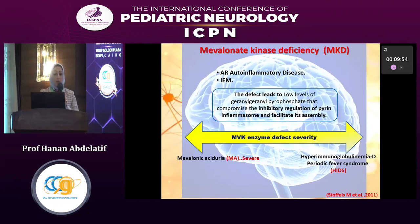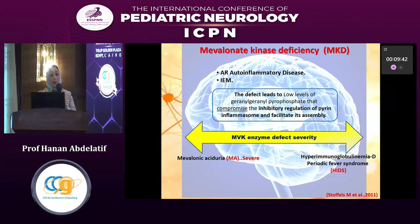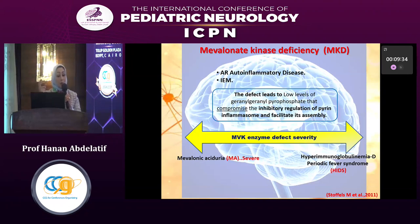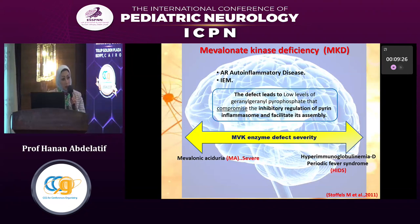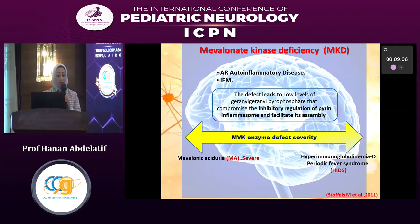Group B is mevalonate kinase deficiency — an overt auto-inflammatory disease. The mevalonate kinase deficiency results in a block in this pathway, leading to decreased production of geranylgeranyl compounds, which are responsible for stopping the interleukin-1 pathway. When not produced, these inhibitory pathways are compromised, leading to a huge amount of interleukin-1 production — responsible for the fever storm and cytokine storm in mevalonate kinase deficiency. They respond well to biological interleukin-1 inhibitors.